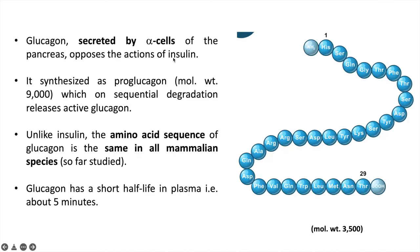Insulin is released from beta cells of the pancreas, but glucagon is released from alpha cells of the pancreas. Glucagon is made up of 29 amino acids and has a molecular weight of 3500. Its biosynthesis starts from pro-glucagon with a molecular weight of around 9000, and after sequential degradation of amino acids, glucagon is released. Unlike insulin, the amino acid sequence of glucagon is the same in all mammalian species, and the half-life of glucagon in plasma is about 5 minutes.